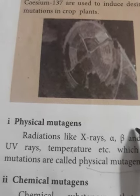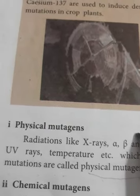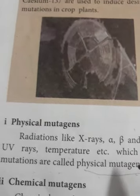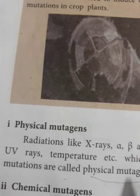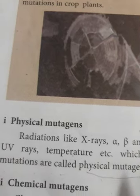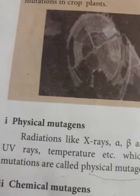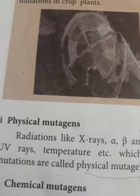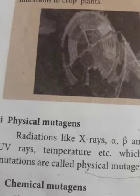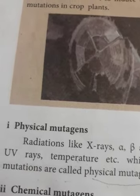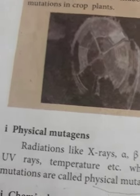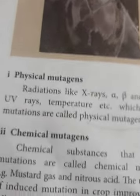So some rays, low temperature, high temperature — these are all considered as physical mutagens. They can also induce mutation, and they are called the physical mutagens.